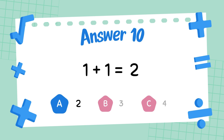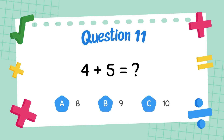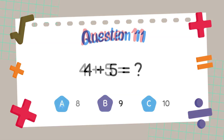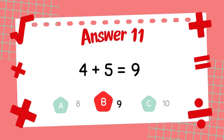What is 4 plus 5? The answer is 2. What is 4 plus 5? The answer is 9.